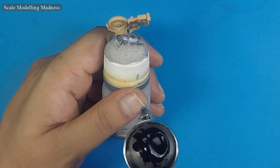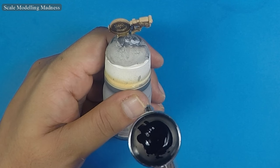The first paint to be sprayed is gloss black which will act as a shadow base as well as a primer for the kit.